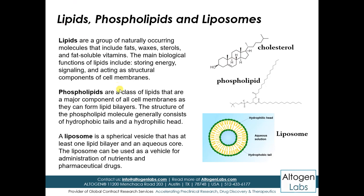What is a phospholipid? Phospholipid is a class of lipid that is the major component of all cell membranes. They can form a lipid bilayer — two layers of lipid. The structure of the phospholipid molecule generally consists of a hydrophobic tail and a hydrophilic head. The head region is polar in nature — hydrophilic — and the hydrophobic tail is non-polar in nature.